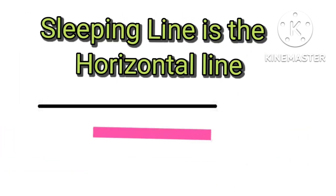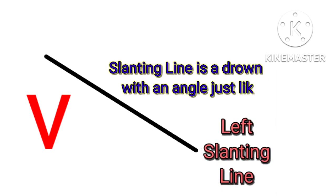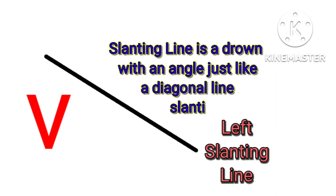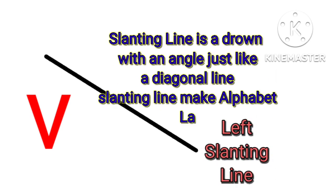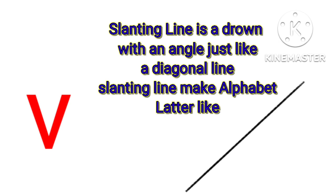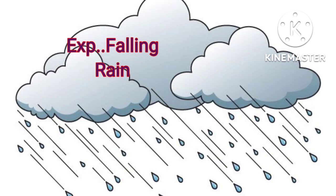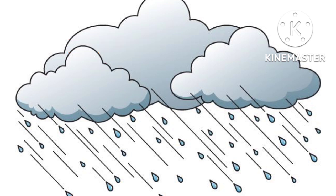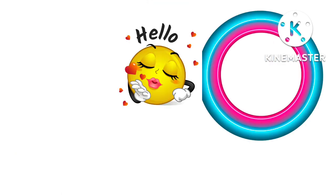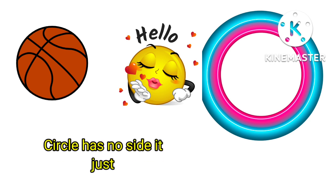Slipping line is the horizontal line. Slanting line is drawn with an angle, just like a diagonal line. Slanting line makes alphabet letters like V, and other things like falling rain and circle.